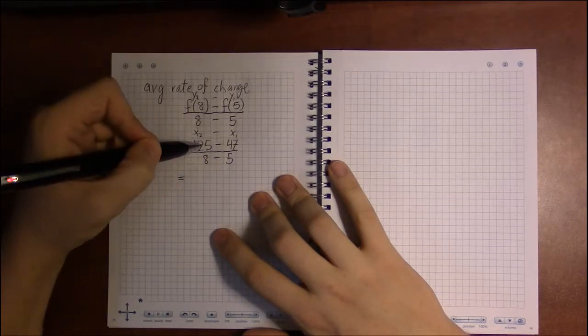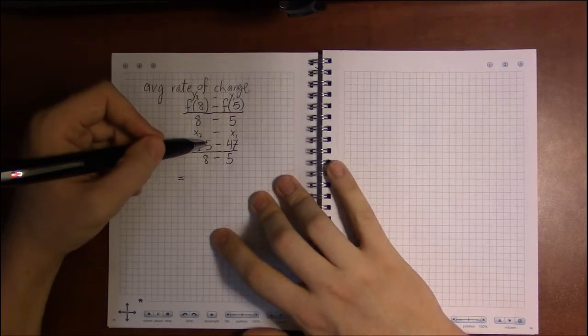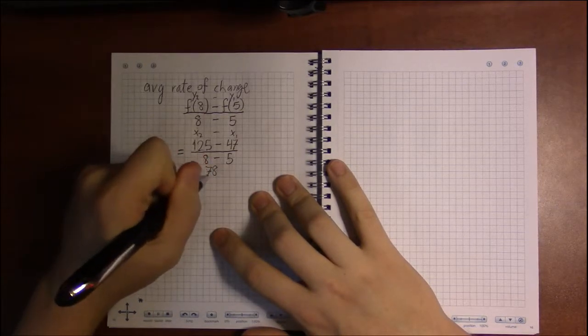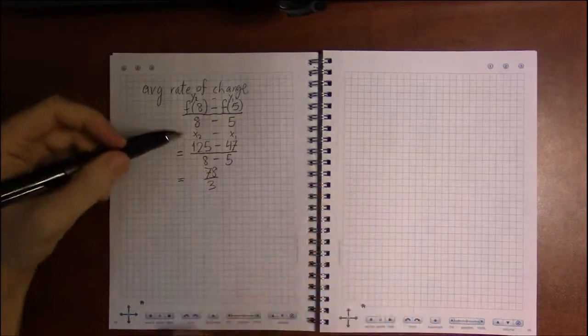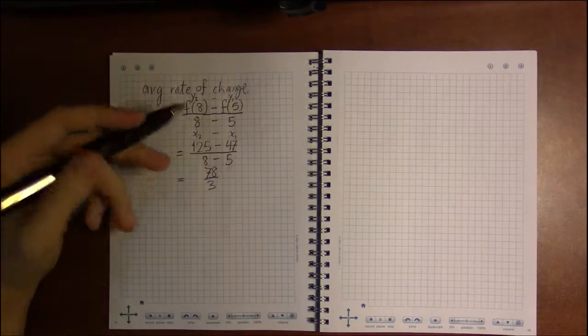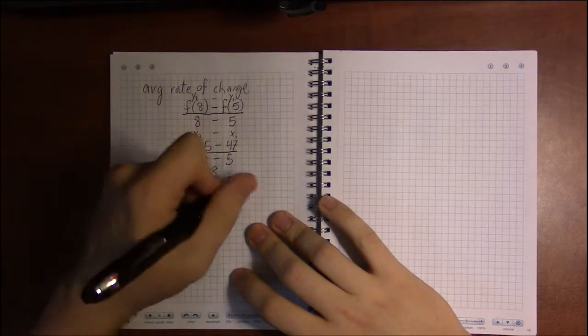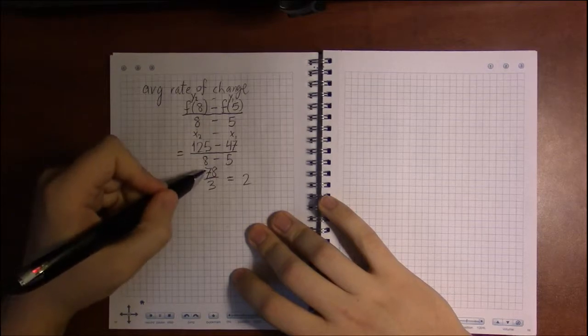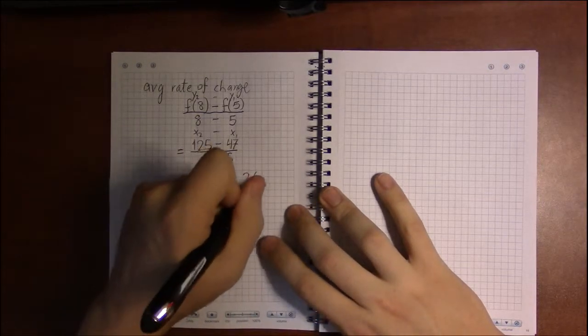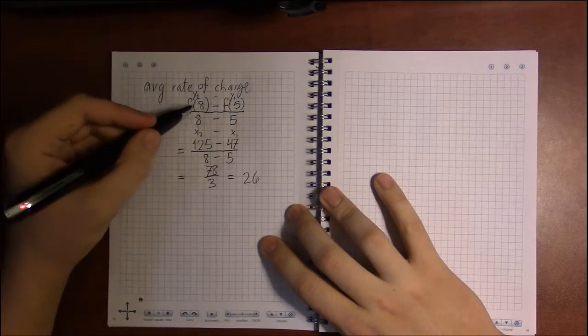And that's being divided by the change in x, the change from 5 to 8, so this is 125 minus 47, which is 78, divided by 3. And this should be divisible by 3, so 26. So the average rate of change is 26.